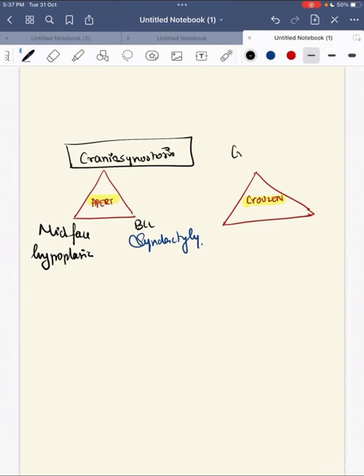While the triad of Crouzon syndrome is again craniosynostosis, that is brachycephaly. Both will have brachycephaly. Facial abnormalities, and the specific feature for this is proptosis. So this is the triad of Crouzon syndrome.